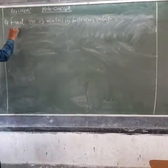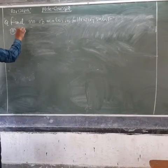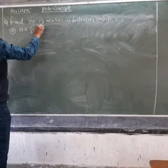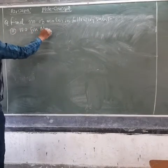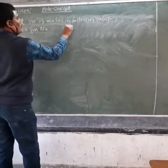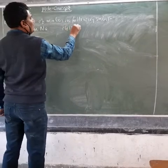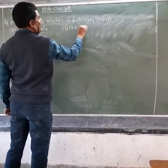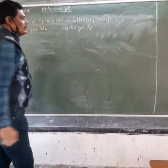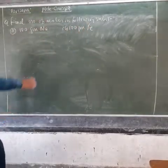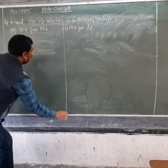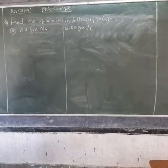Here we have been given two substances: number one, 100 grams of sodium, and number two, 100 grams of iron. Now we have to find the number of moles.